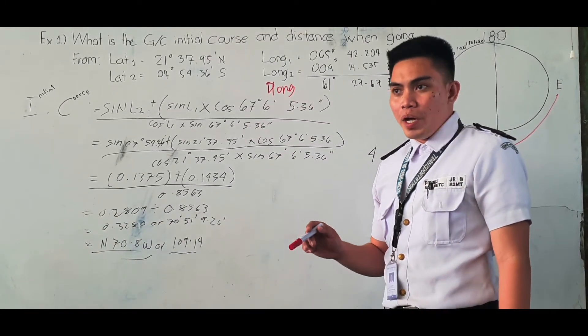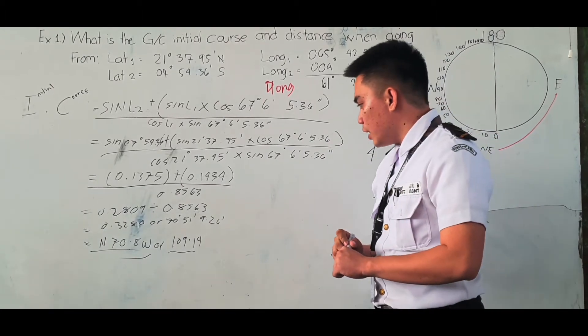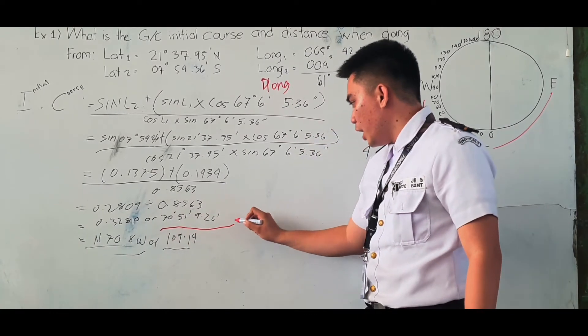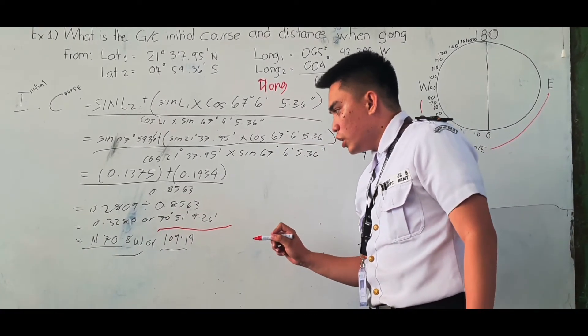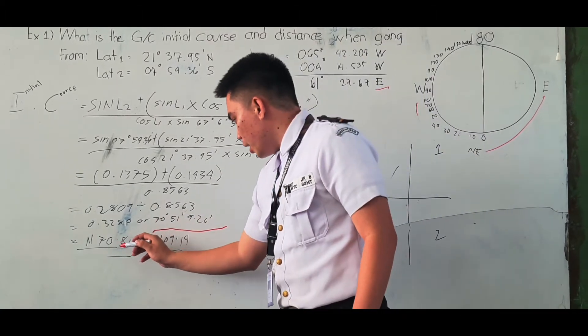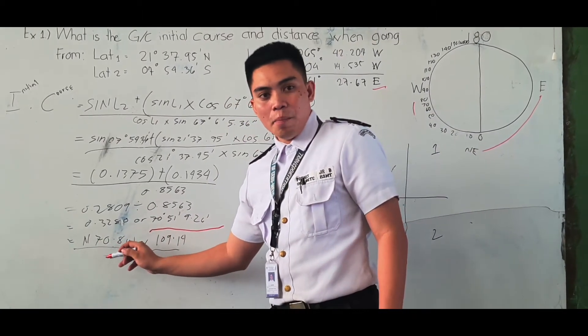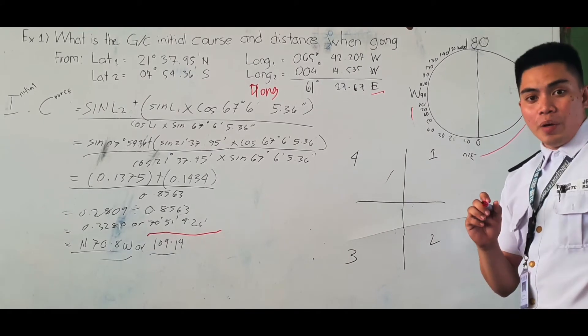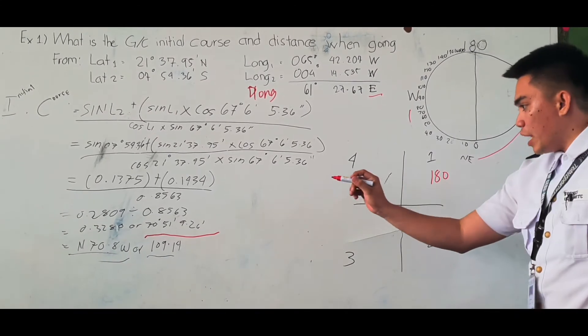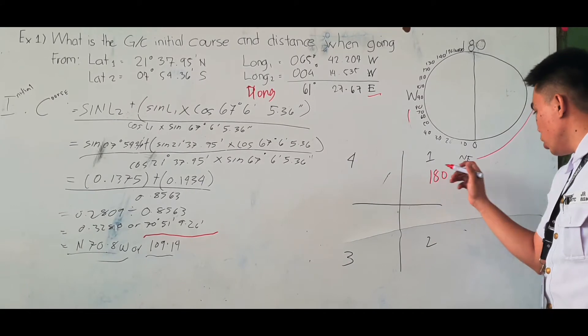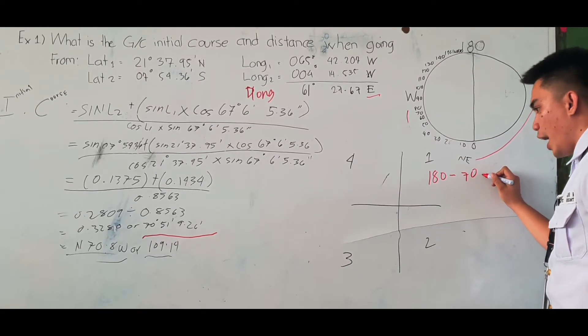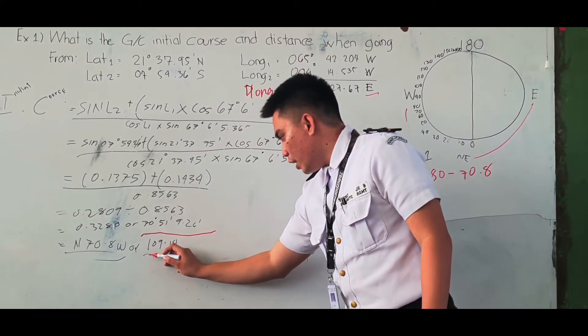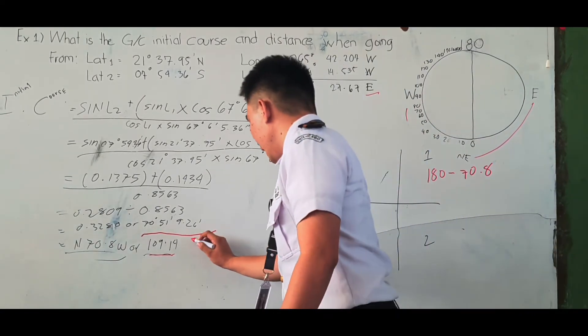The next thing to do, we use shift cos to convert it to degrees. The answer is 70 degrees 51 minutes 9.26 seconds. This number belongs to quadrant 1. When you belong to quadrant 1, we subtract the number from 180. So 180 minus 70.8, the answer is 109.14. This is how we get the initial course.